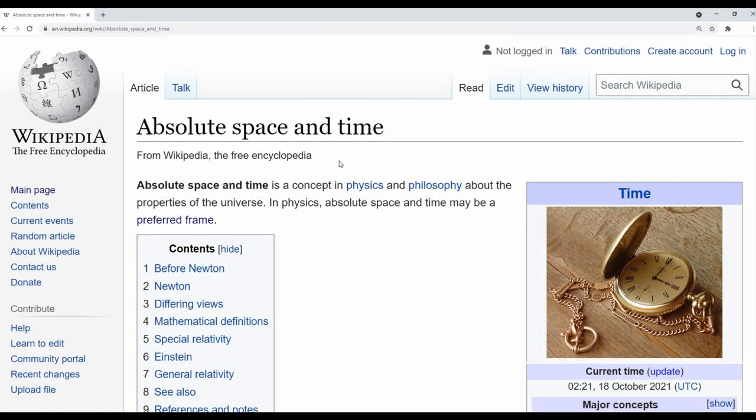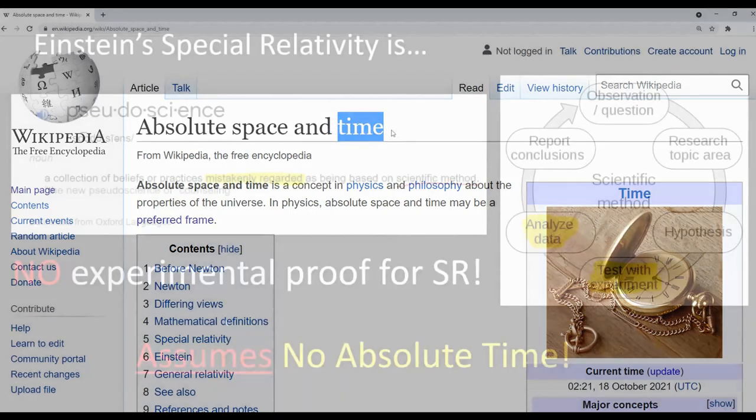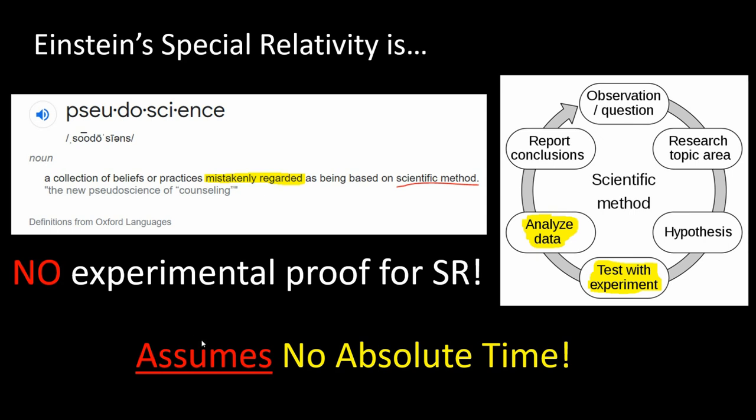I guess you could still move forward with Einstein's relativity. You just have to realize that you believe that absolute time is wrong. You are postulating or assuming that relative time is fundamental to the universe.